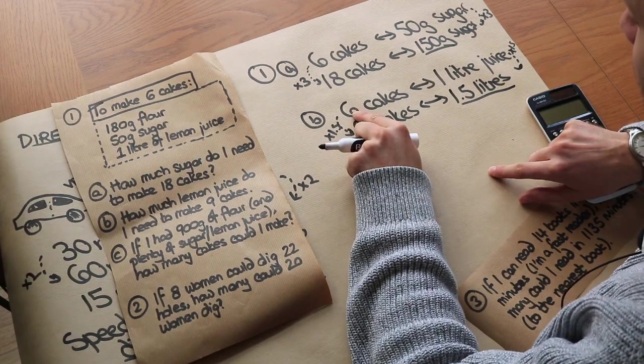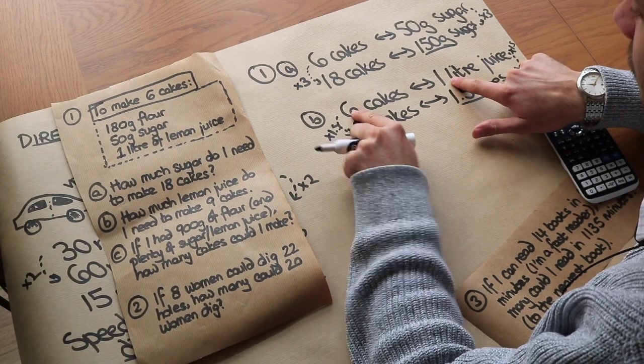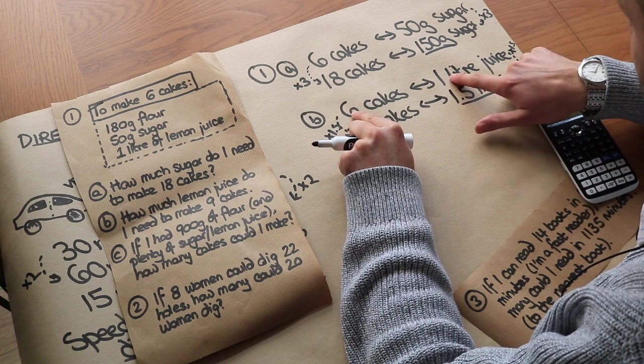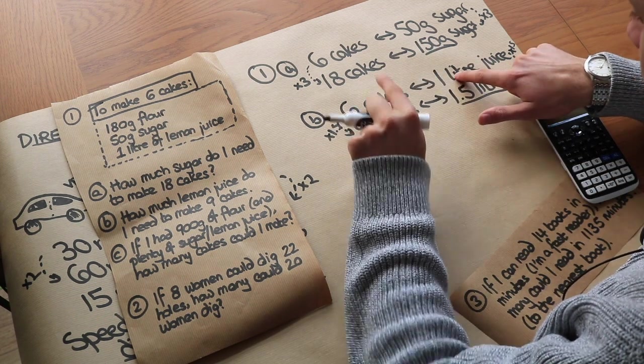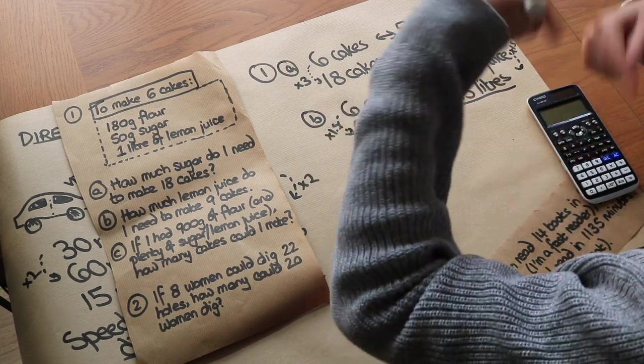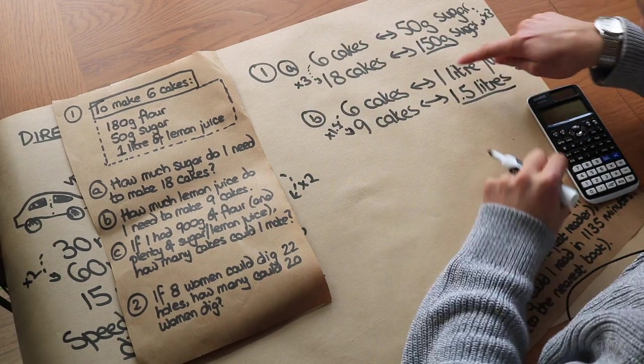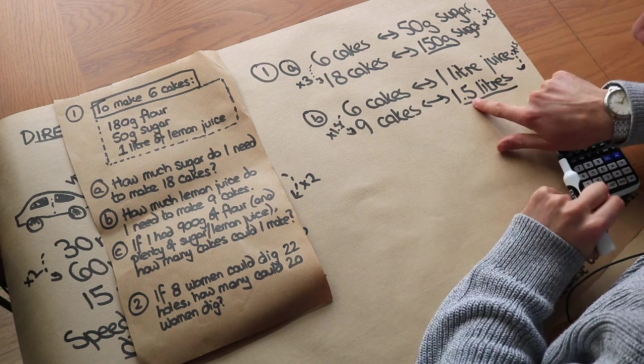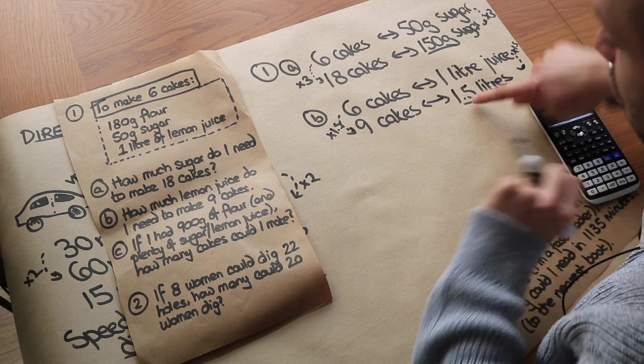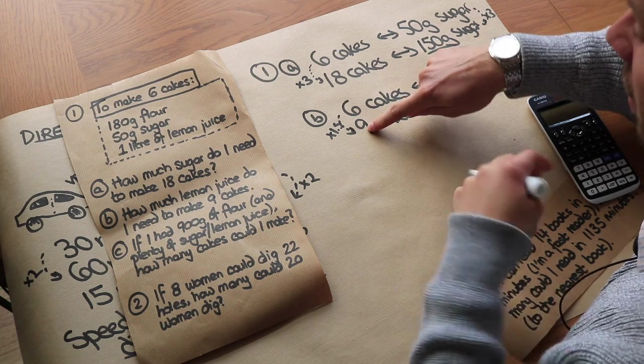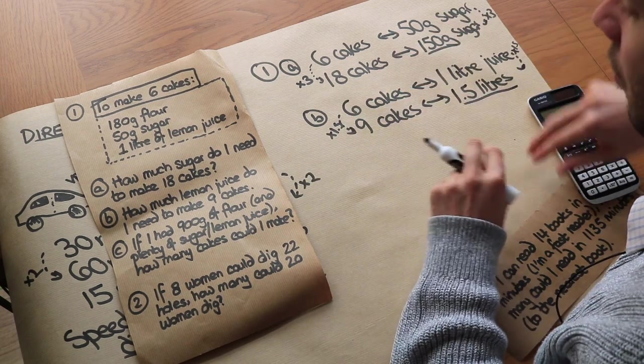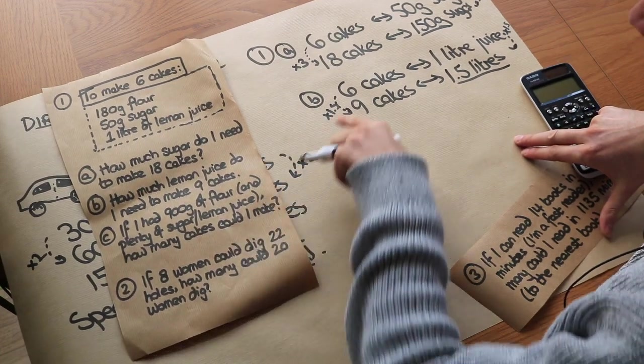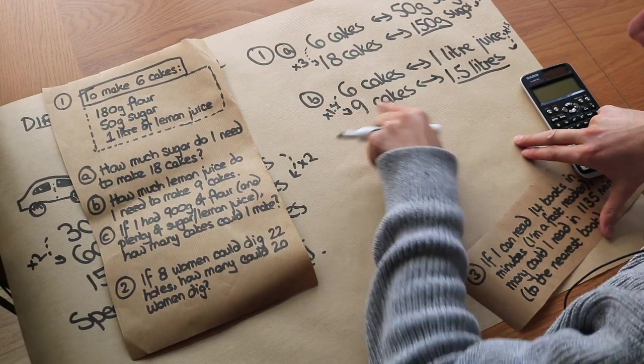Now if you didn't have a calculator, what you could do is you could say: well, if 6 cakes is one liter, then 3 cakes would be half as much, which is half a liter. So if 3 cakes is half a liter, then 9 cakes would be 3 times as much, and 3 times as much as half a liter would be 1.5 liters. So you could find a number that's common to both 6 and 9 cakes - in this case 3 is a common factor of both - and therefore work out 3 cakes first. But it's probably easiest to just work out that scale factor by dividing.